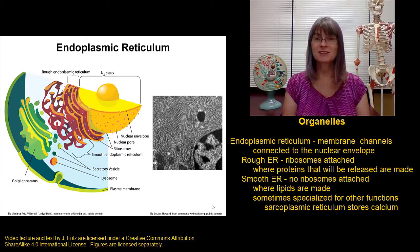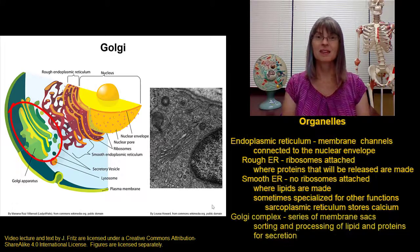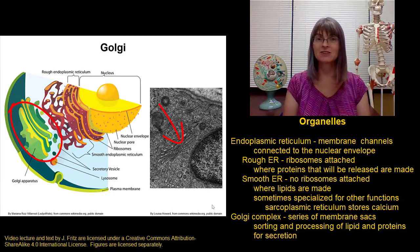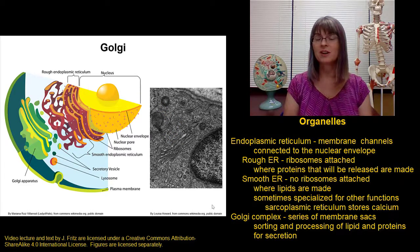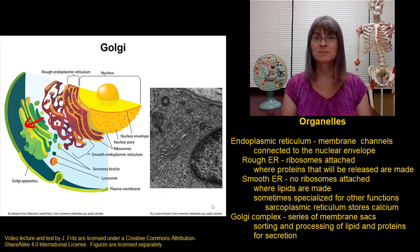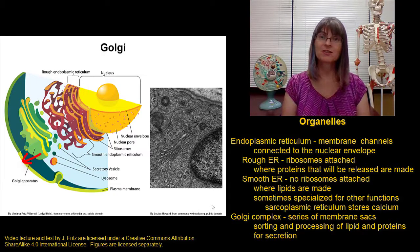Lipids and proteins that are destined to be secreted from the cell go from the endoplasmic reticulum to the Golgi. The Golgi complex is a series of membrane sacs stacked on top of each other, and this serves as the warehouse — this is where lipids and proteins are sorted, tagged, and packaged before they're ready to be released. They come from the ER in vesicles that fuse with the Golgi complex to allow those proteins to be sorted through the various layers. Once that is accomplished, they're packaged into transport vesicles at the other side of the Golgi complex and are now ready to be released from the cell.